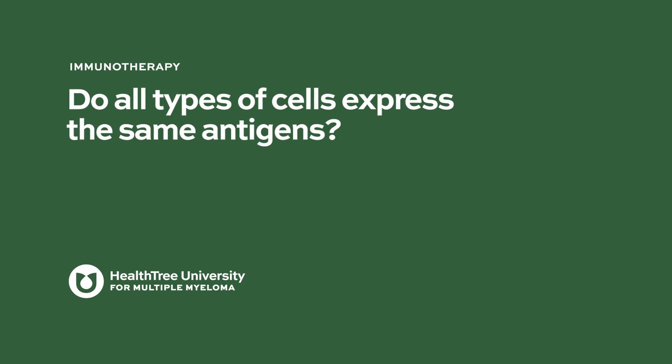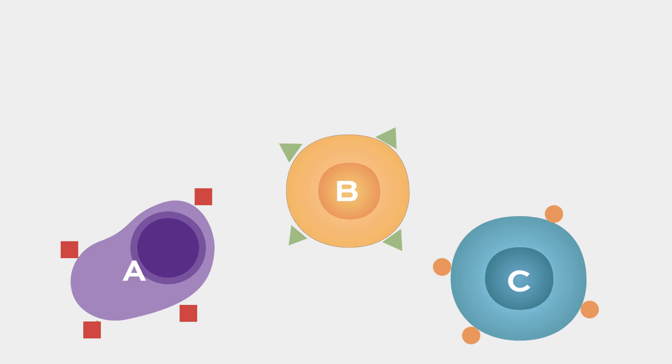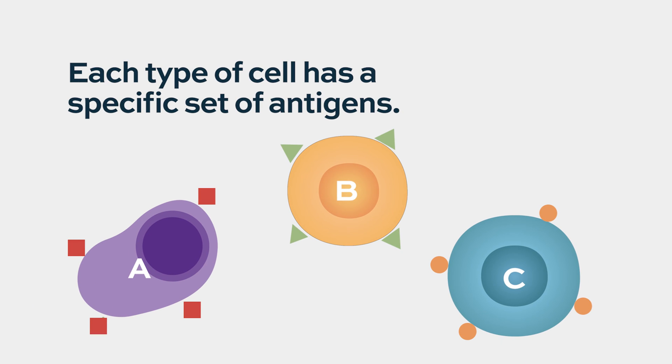Do all types of cells express the same antigens? There are millions upon millions of antigens and theoretically we have antibodies to all of these, but they're all specific. Every cell will have a specific type of antigen — multiple types of antigens — but they're not all the same and they should be very specific for that particular cell type.